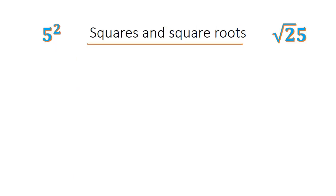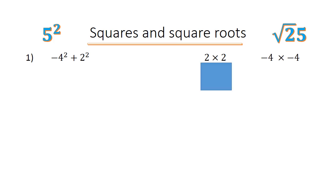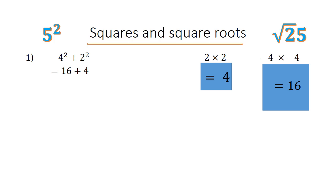Squares and square roots: negative 4 to the power of 2 plus 2 to the power of 2. 2 times 2 equals 4. Negative 4 times negative 4 equals 16. 16 plus 4 equals 20.